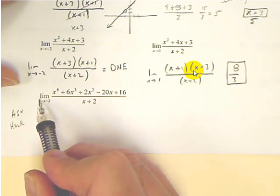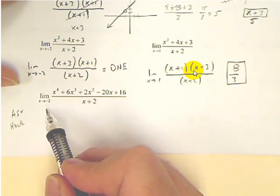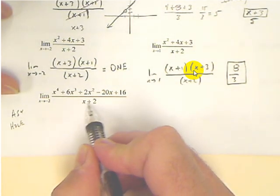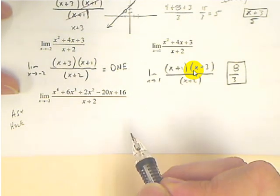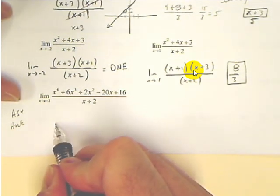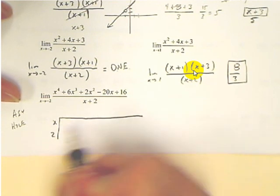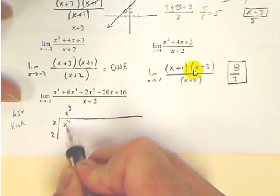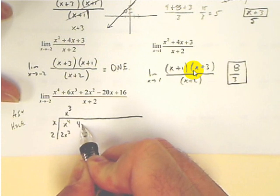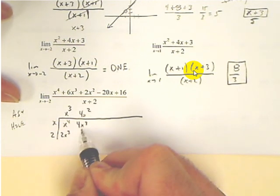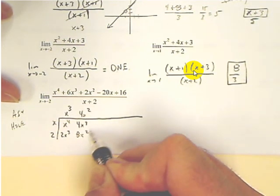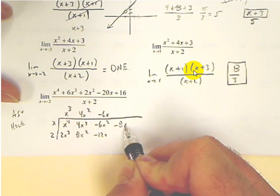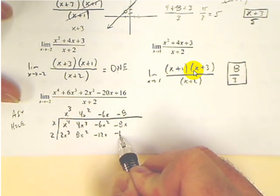And to find the limit at a hole, you're going to plug negative 2 into the equation with the hole taken out. So, to figure out if x plus 2 is in the numerator, we have to do long division. Polynomial division here, just to see if x plus 2 is in that numerator. And if it is in there, you won't get a remainder.